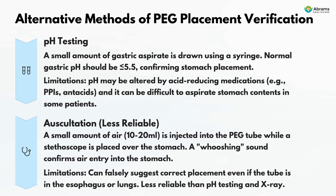Alternative methods of PEG placement verification include pH testing and auscultation. For pH testing, a small amount of gastric aspirate is drawn; normal gastric pH should be ≤5.5, confirming stomach placement. Limitations include pH alteration by acid-reducing medications such as PPIs and difficulty aspirating in some patients. Auscultation involves injecting 10–20 mL of air into the tube while listening with a stethoscope for a whooshing sound, but it can falsely suggest correct placement even if the tube is in the esophagus or lungs.